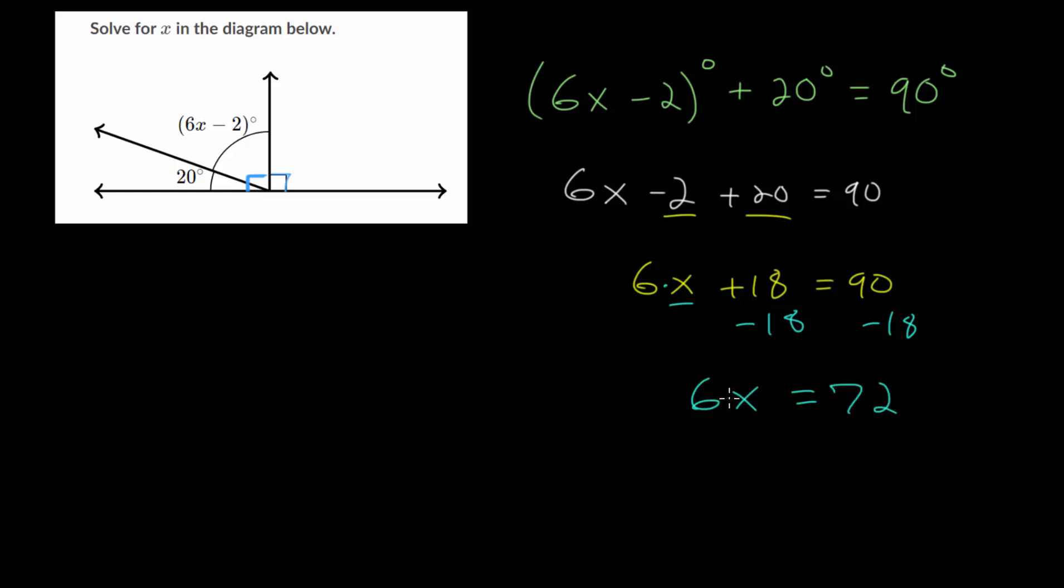And lastly, we need to cancel out this multiplication by 6. We will divide each side by 6. 6 divided by 6, that is just 1. So we get x is 72 over 6, which is 12.